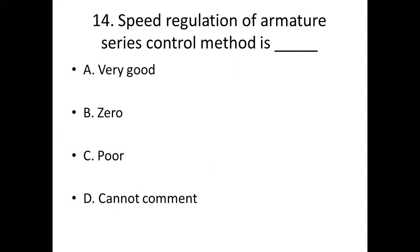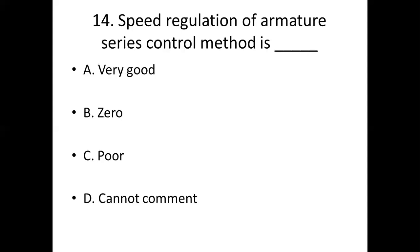Fourteenth one. Speed regulation of the armature series control method is dash. Option A: very good. Option B: zero. Option C: poor. Option D: cannot comment. Answer: Option C, poor.